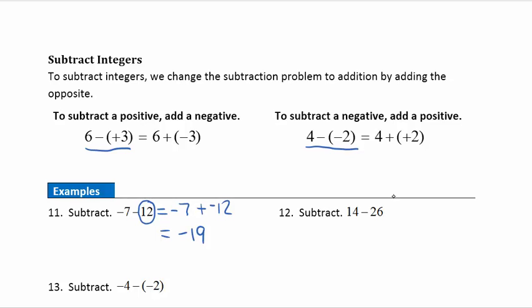Example twelve: the first number stays the same, subtraction becomes addition, and we were subtracting positive twenty-six, so that changes to its opposite: negative twenty-six. Now adding opposites — do we have more negatives or more positives? More negatives. How many more? It looks like twelve more, so the answer is negative twelve.